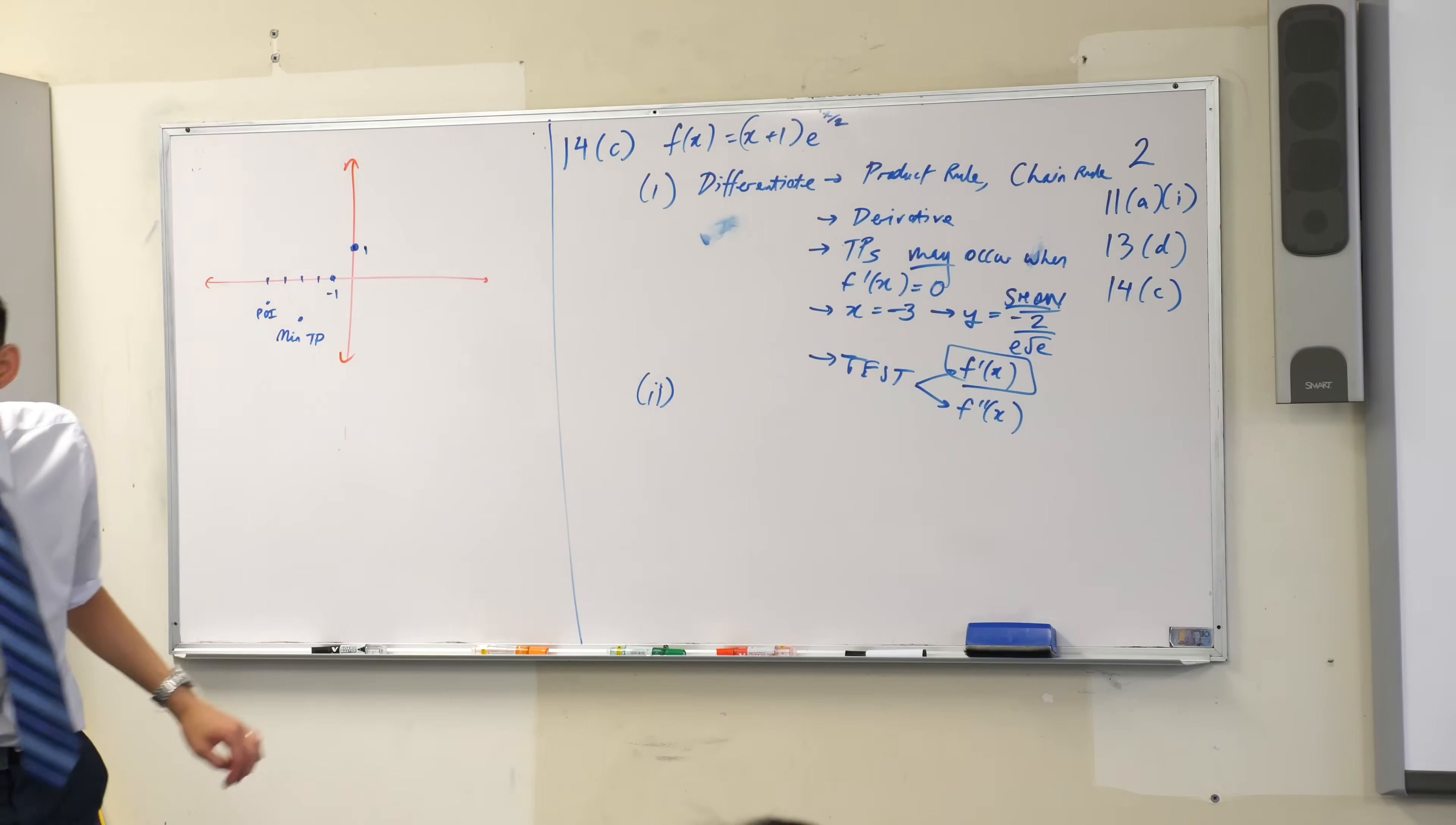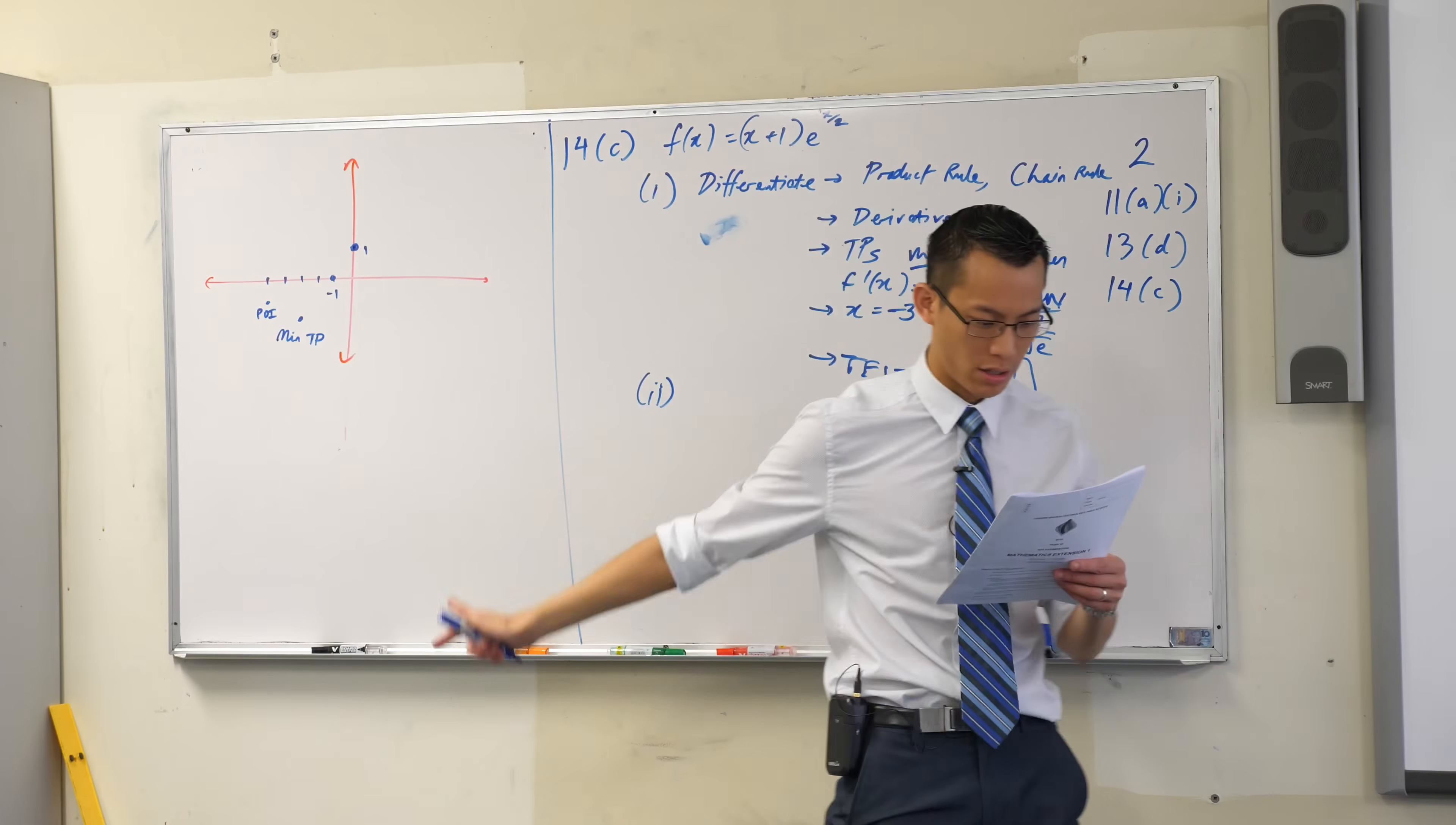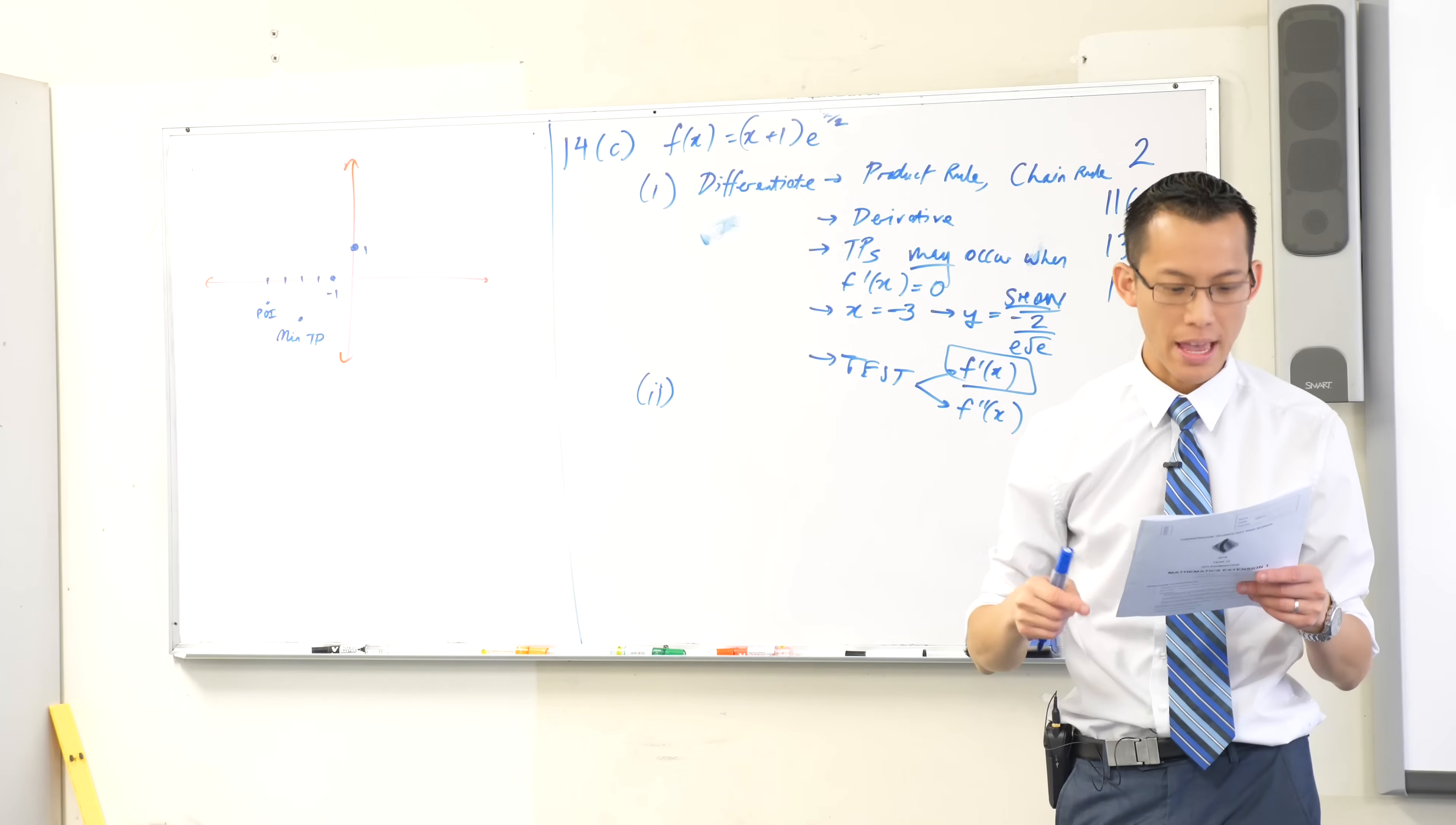Now, look again at the question. It lists out a whole bunch of things, right? That it says, hey, we want you to put this on. Stationary points. Got those. Point of inflection. Got that. Intercepts with coordinate axes. Got that. What's the last thing it mentions?